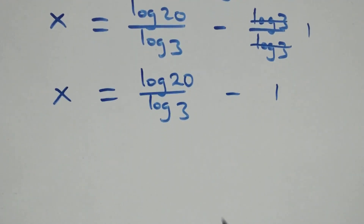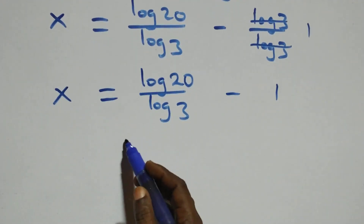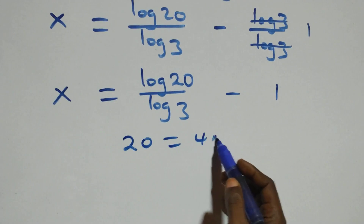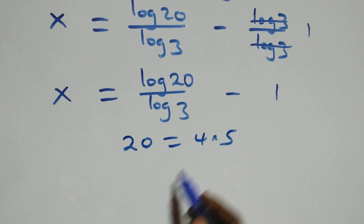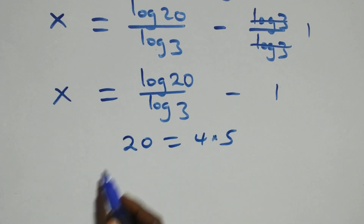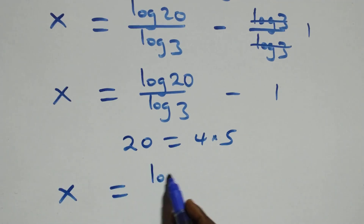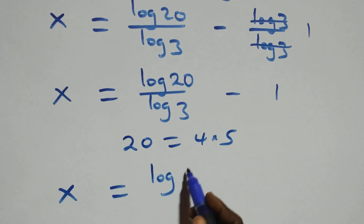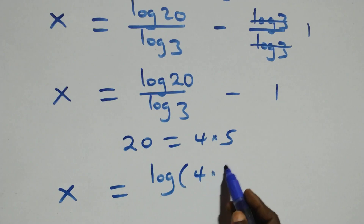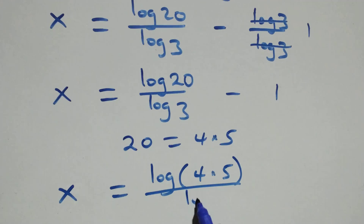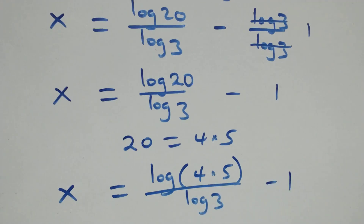Next, we can express twenty as four times five. So all we have becomes x equals log of four times five over log three, minus one.